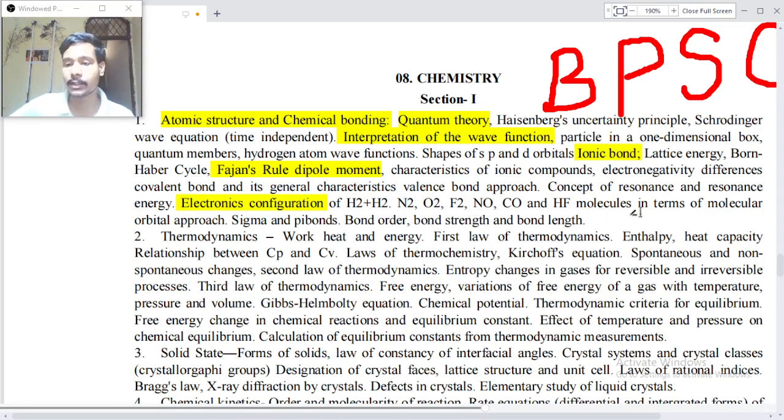Electronic configuration of H2 plus, H2, N2 plus, O2, F2, NO, CO and HF molecules in terms of molecular orbital approach. Point number two: Thermodynamics - work, heat and energy, first law of thermodynamics, enthalpy, heat capacity, relationship between Cp and Cv, laws of thermochemistry, Kirchhoff's equation, spontaneous and non-spontaneous changes, second law of thermodynamics.